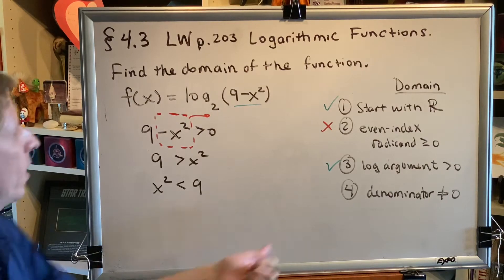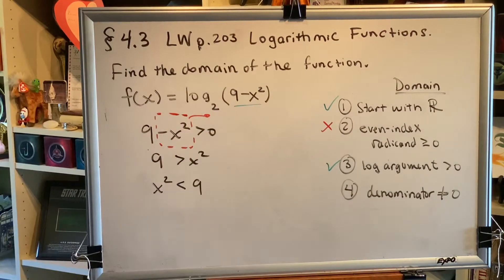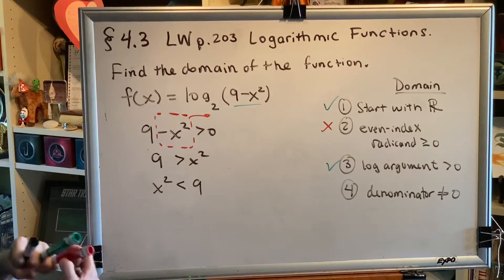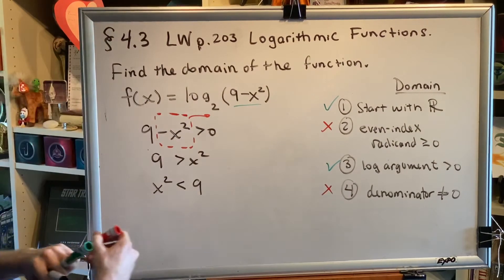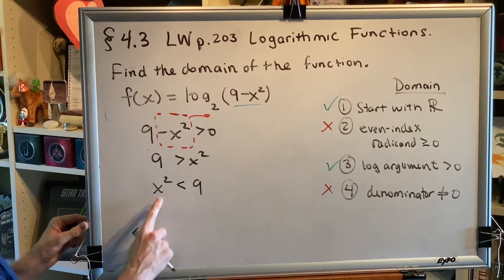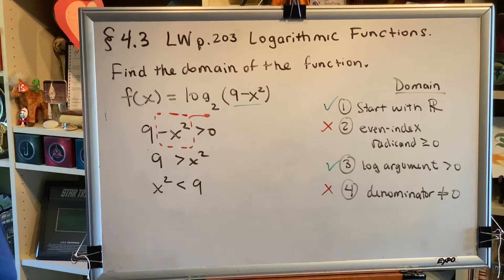Alright, so the last step is denominators. We don't have any denominators. So if we can just solve this inequality, then that's going to tell us the answer for this particular question. So we have to ask ourselves this important question: for what values of x would x squared be less than 9?